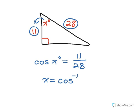I give it the ratio of 11 to 28 and it gives me back the number of degrees of this angle. X is approximately, to the nearest whole degree, 67 degrees. So those are examples of how to use the cosine and sine functions in right angle trigonometry.